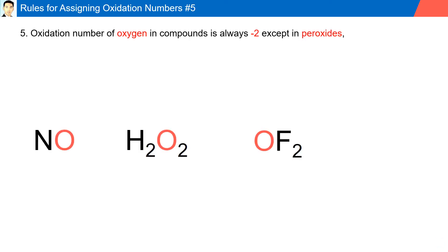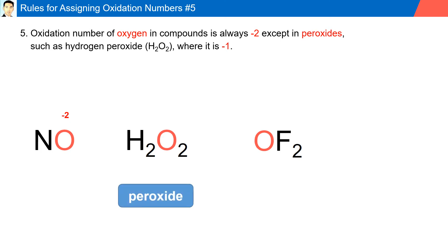Rule number five: the oxidation number of oxygen in compounds is always minus two, except in peroxides such as hydrogen peroxide (H2O2), where it is negative one. Here we have NO — the oxygen has an oxidation number of minus two. We have the peroxide H2O2; since it's a peroxide, the oxygen has an oxidation number of minus one.